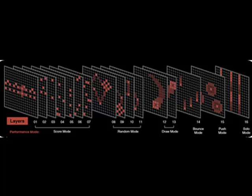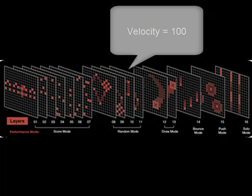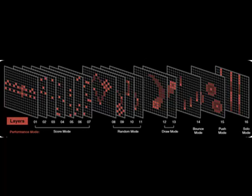One of the downsides of the implementation, at least currently in the Tenorion, is that when it produces MIDI notes, they're at a fixed velocity of 100, and you can't change the velocity in this step.